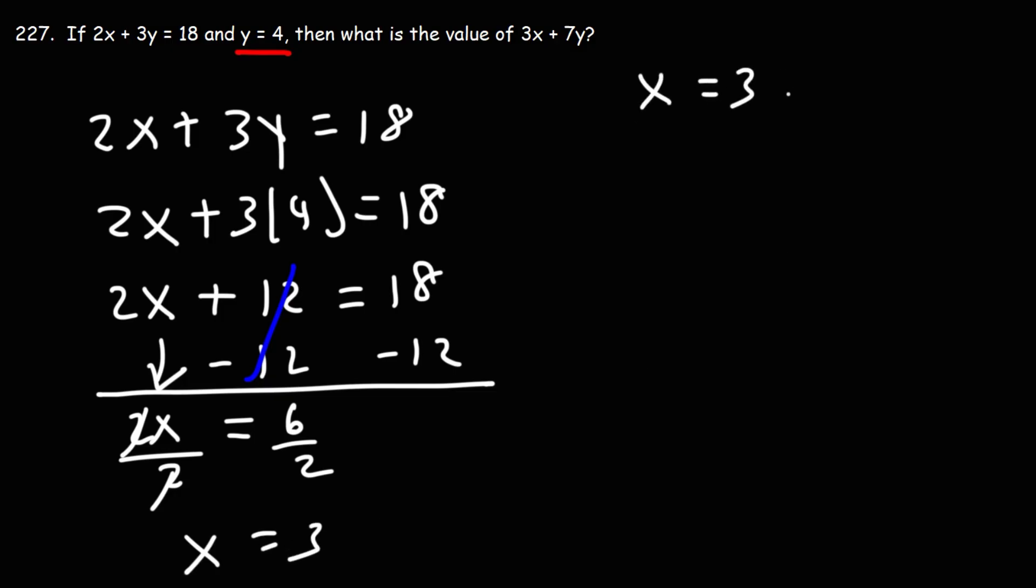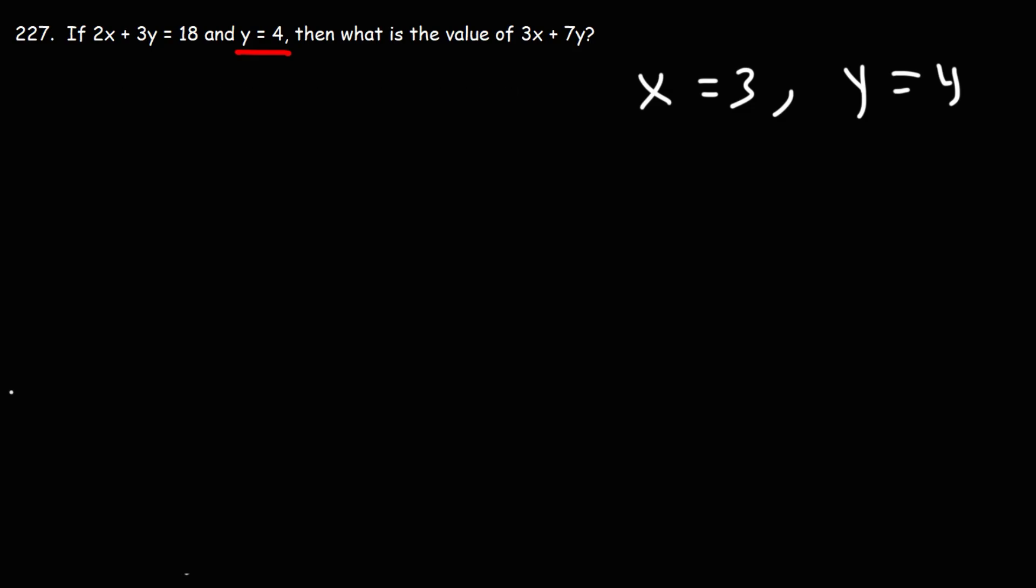So we know that x is 3 and y is 4. So now that we have the value of x and y, we could find the value of 3x plus 7y. All we need to do is replace x with 3 and y with 4.